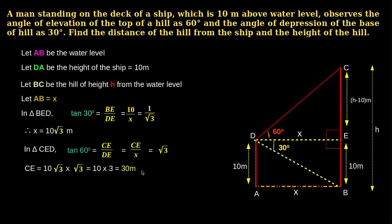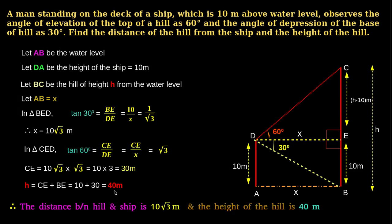Therefore, the height H can be given as H equals CE plus BE, that is 10 plus 30, which is 40 meters. Therefore, the distance between hill and the ship is 10 root 3 meters and the height of the hill is 40 meters.